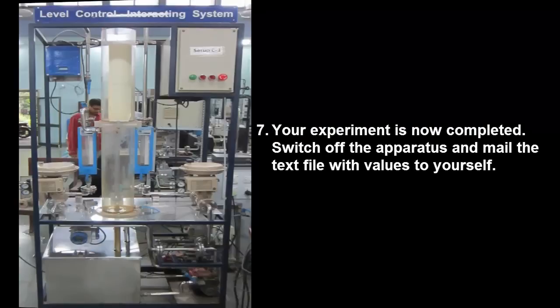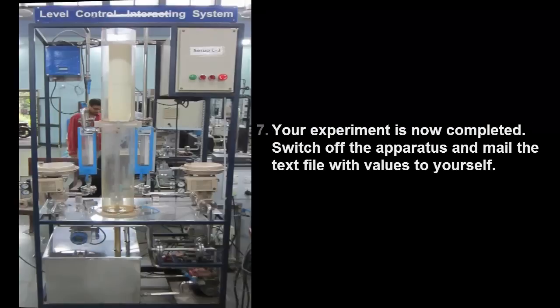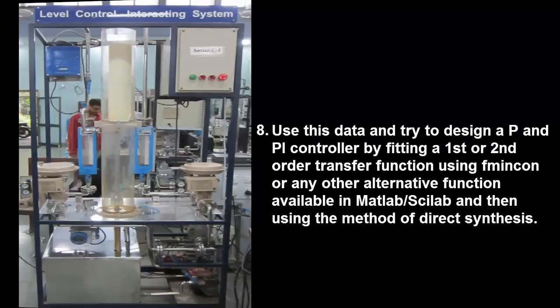Switch off the apparatus and mail the text file with the values to yourself. Next, using the data file, try and design a P or a PI controller by fitting a first or a second order transfer function using fmincon or any other alternative function in MATLAB or scilab and then using method of direct synthesis.